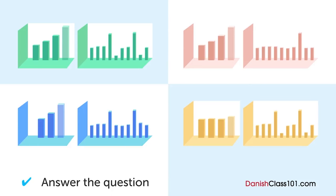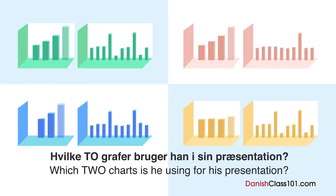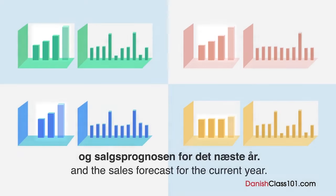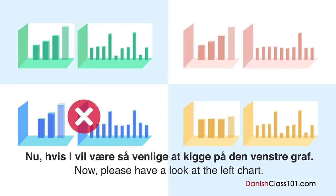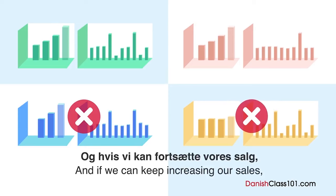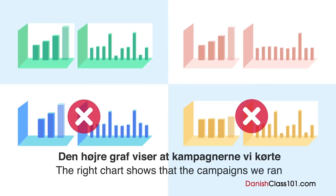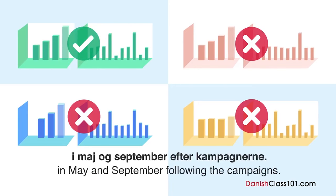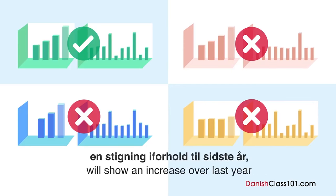Hvilke to grafer bruger han i sin præsentation? En mand rapporterer omkring sit firma salgsresultater i et møde. Vær venlig at kigge på handoutet. Den venstre graf viser vores firmas salgstal fra de sidste tre år og salgsprognosen fra det næste år. Den højre graf viser den månedlige salgsoversigt frem til oktober i år. Salget er steget stødt over de sidste tre år. Det totale salg i år vil vise en stigning i forhold til sidste år. Den højre graf viser at kampagnerne vi kørte i april og august var rimelig effektive, men salget faldt i maj og september. Den slags bagslag er uundgåeligt. Jeg forventer at det årlige salg for i år vil vise en stigning, hvis vi kan fortsætte med at øge vores salg.